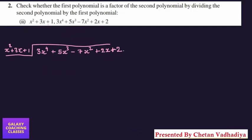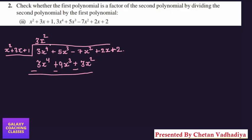Moving to question 2(ii): the first polynomial is x²+3x+1 and the second is 3x⁴+5x³–7x²+2x+2. To get 3x⁴, we multiply x² by 3x², giving 3x⁴; then 3x² by 3 gives 9x³, and 3x² by 1 gives 3x². After changing signs, 3x⁴ cancels, leaving –4x³–10x²+2x+2.